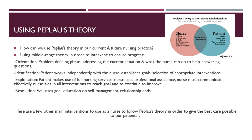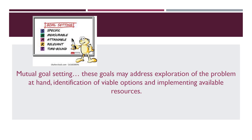I'm going to talk about other main interventions to follow Peplau's theory to give the best care possible to our patients. The first intervention is mutual goal setting. These goals may address exploration of the problem at hand, identification of viable options, and implementing available resources. When mutual goal setting with the patient, we want to make sure they are using the SMART acronym — specific, measurable, attainable, relevant, and time-bound. If the patient expresses their goals to the nurse, there will be a mutual goal understanding and we can make implementations to improve their condition.